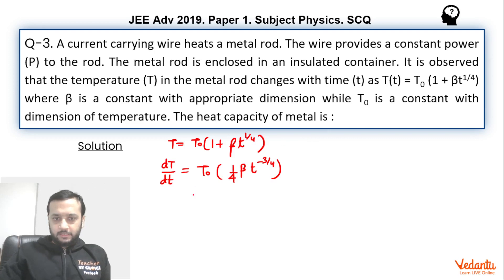So if you see, if you want to find the T^(1/4) value, so T/T₀ minus 1 whole upon beta, right. This is T to the power 1/4. This we can substitute it over here.